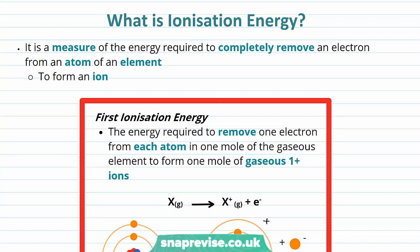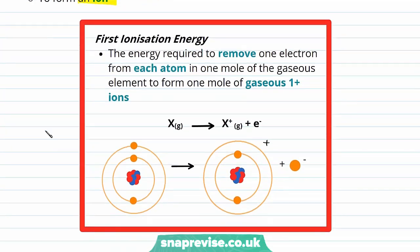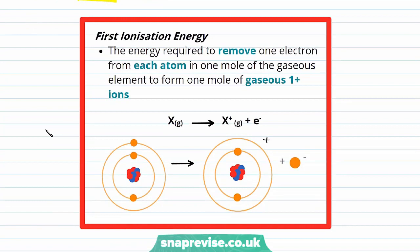So let's begin by looking at what exactly is ionization energy. Ionization energy is a measure of the energy required to completely remove an electron from an atom of an element, and we form an ion. The first ionization energy is the energy required to remove one electron from each atom in one mole of the gaseous element to form one mole of gaseous 1+ ions. This is the equation we use to represent it — one mole of the gaseous element forming one mole of gaseous 1+ ions, removing one mole of electrons.